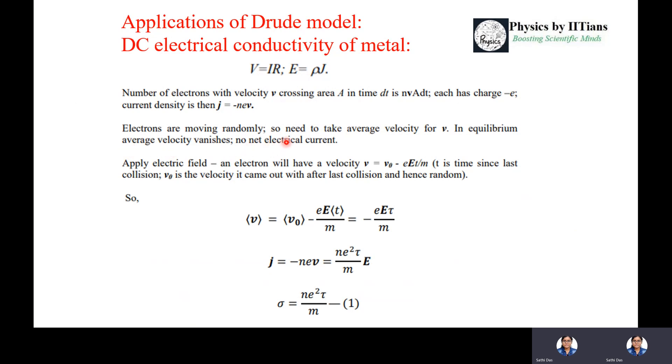Electrons are moving randomly, so we need to take the average velocity. In equilibrium, this average velocity vanishes when there is no electrical current. Why does average velocity vanish? Because some electrons move left, some move right, some forward, some backward. So average velocity vanishes and there will be no net current when there is no external field.